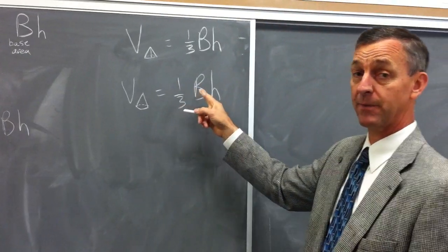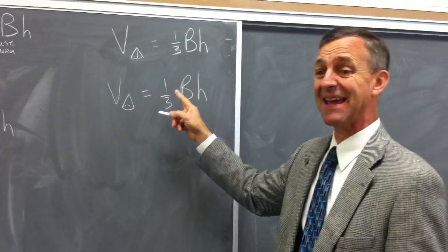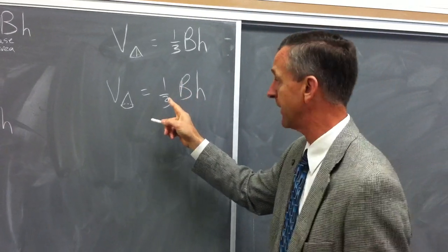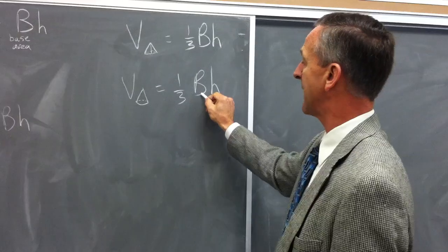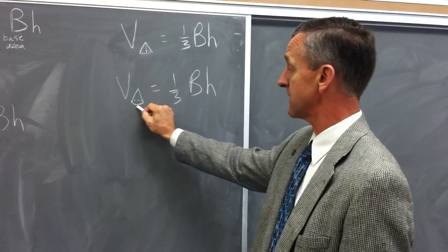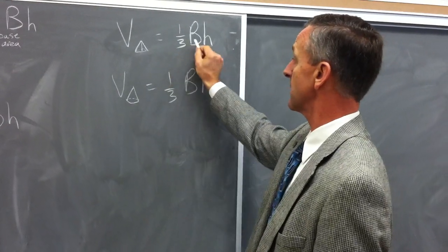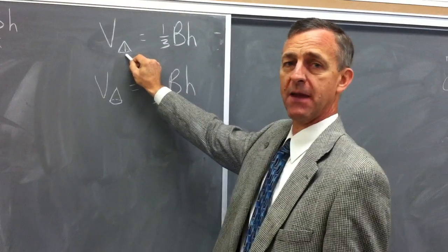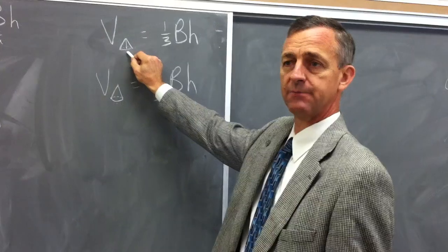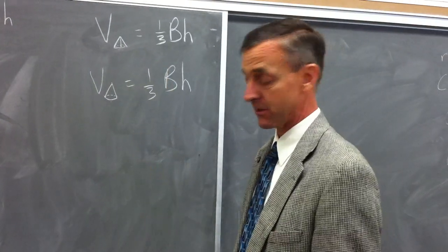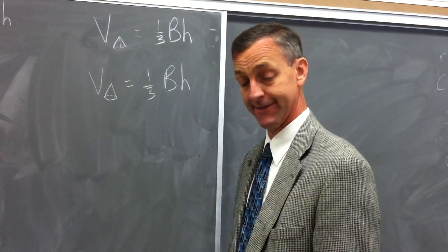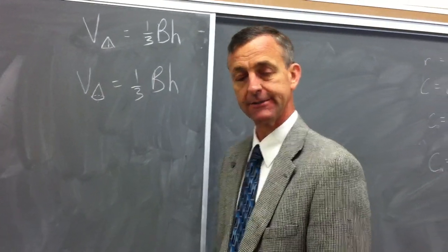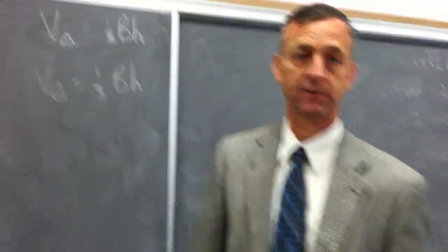So we can say: volume of a cone is equal to one-third times base area times height. Keep in mind that the capital B is base area — for the cone, that base area is a circle, whereas for the pyramid it is whatever shape the base of the pyramid is.